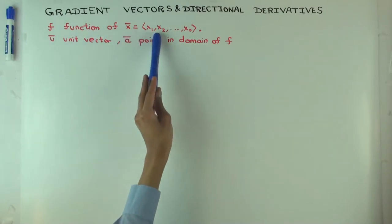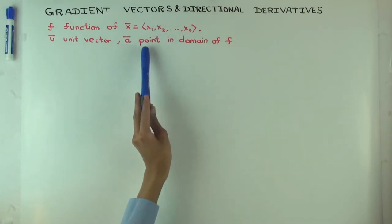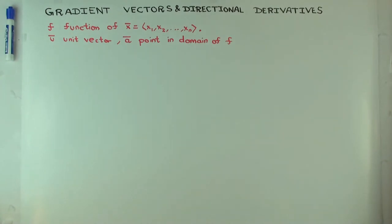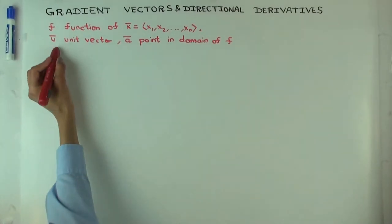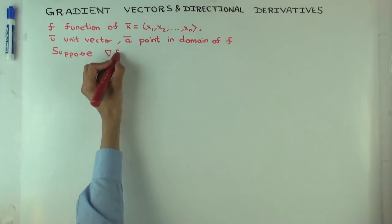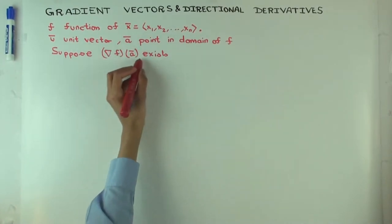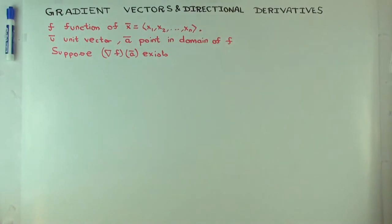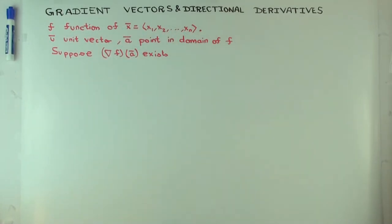In our setup, f is a function of a vector variable. U is a unit vector along which we'll try to take directional derivatives. And a is a point in the domain of the function. The gradient vector of f at a is a vector — in the same dimensions as the input — and u is also a vector in n dimensions.